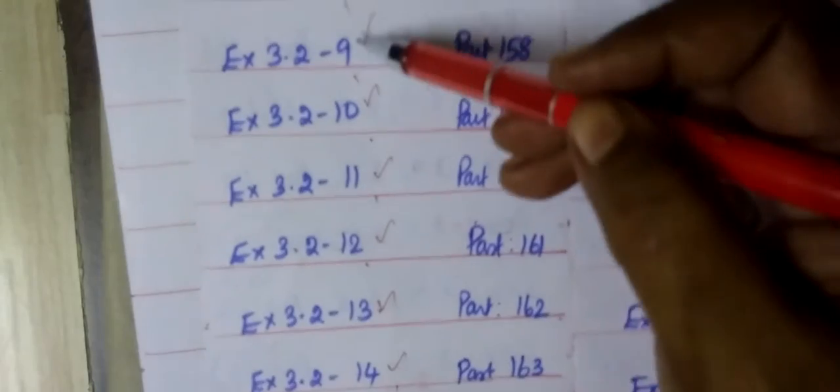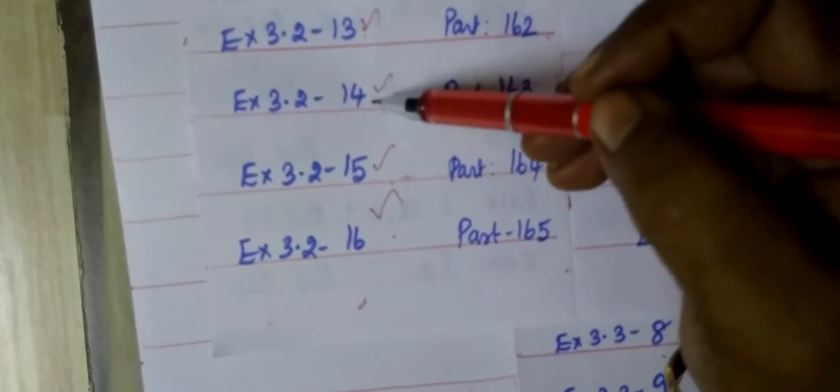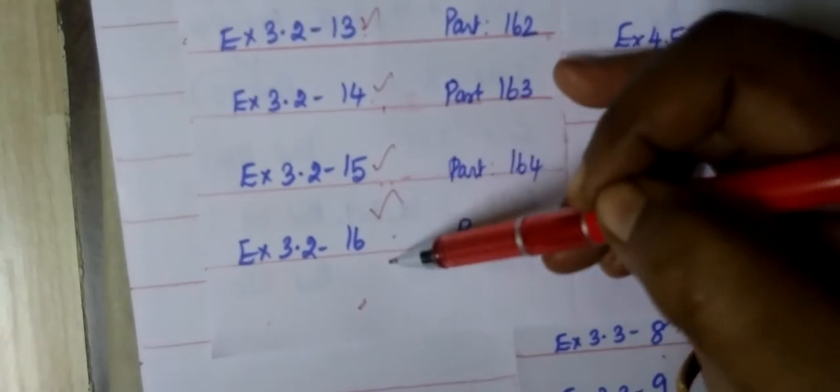Then exercise 3.1, then 8, 9, 10, 11, 12, then question number 13, 14, 15, then 16.